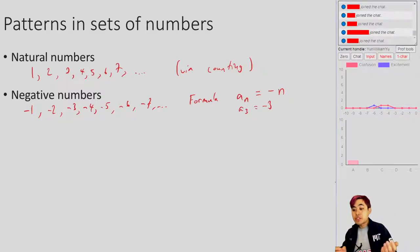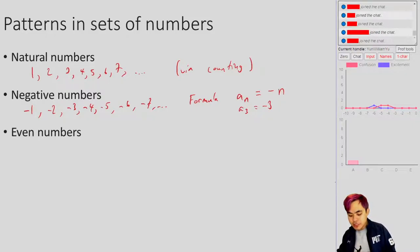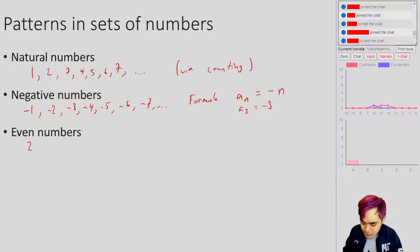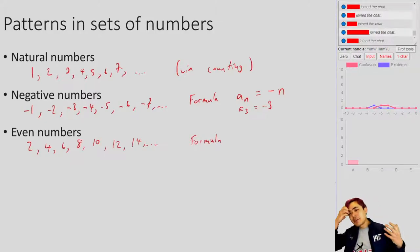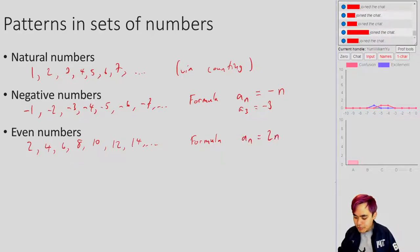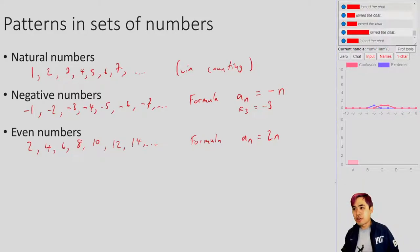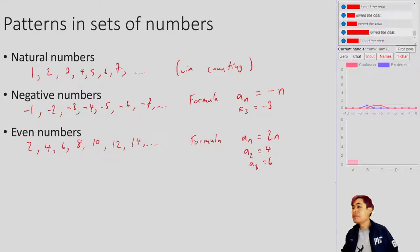Things get a little bit more interesting when you start having more complicated sets of numbers. For example, the even numbers: 2, 4, 6, 8, 10, 12, 14, and so on. You can write down a formula for this as well, and this lets you formalize this sort of pattern. The formula for these numbers is a_n is equal to 2n. So the first even number is 2, the second is 4, the third is 6, and so on.